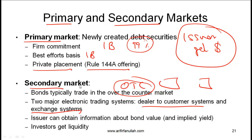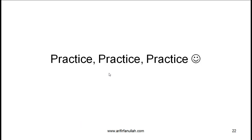There are two major electronic trading systems for bonds: dealer-to-customer systems and exchange systems. The benefit to the issuer from secondary market activity is that they can obtain information about bond value and implied yield — helping them price new bond issuances. An active secondary market makes it easier for the issuer to raise new debt, and from an investor perspective it provides liquidity.